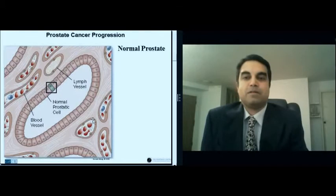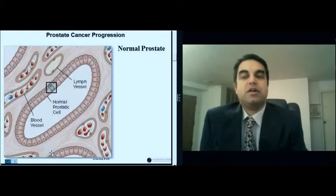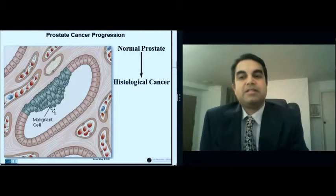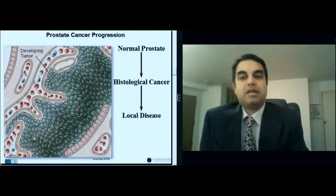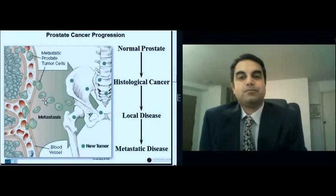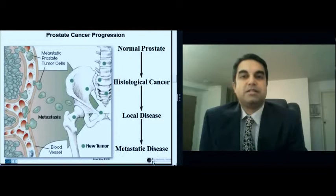So the classic model of prostate cancer starts off with a single epithelial cell that undergoes a few genetic mutations, eventually providing it a selective advantage to result in a histological cancer. And as these cells continue to multiply and proliferate, eventually it ends up as a local disease. And these cancer cells can then extravasate into the bloodstream and eventually they'll target the bone. And this is called metastatic disease.